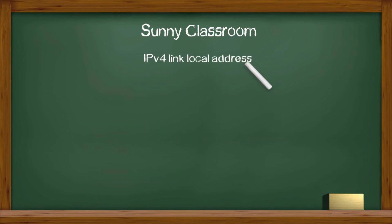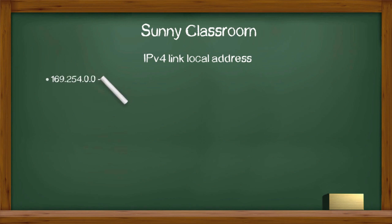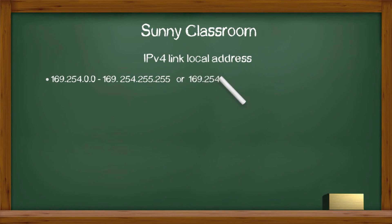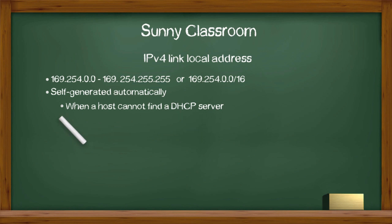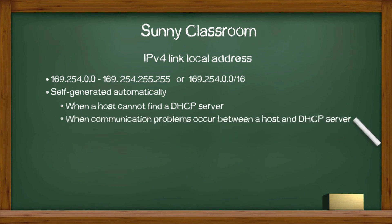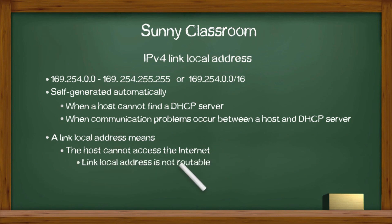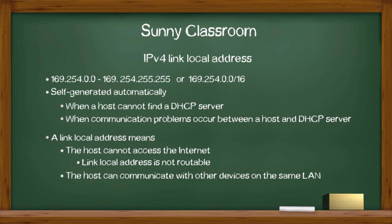Link-local address. Link-local address is any IP address from 169.254.0.0 to 169.254.255.255, or we can use the shorthand 169.254.0.0/16. Link-local addresses are self-generated automatically when a host or DHCP client cannot find a DHCP server, or there are communication errors between them. A link-local address also means the host or client cannot access the internet but can still communicate with other local devices such as a printer.